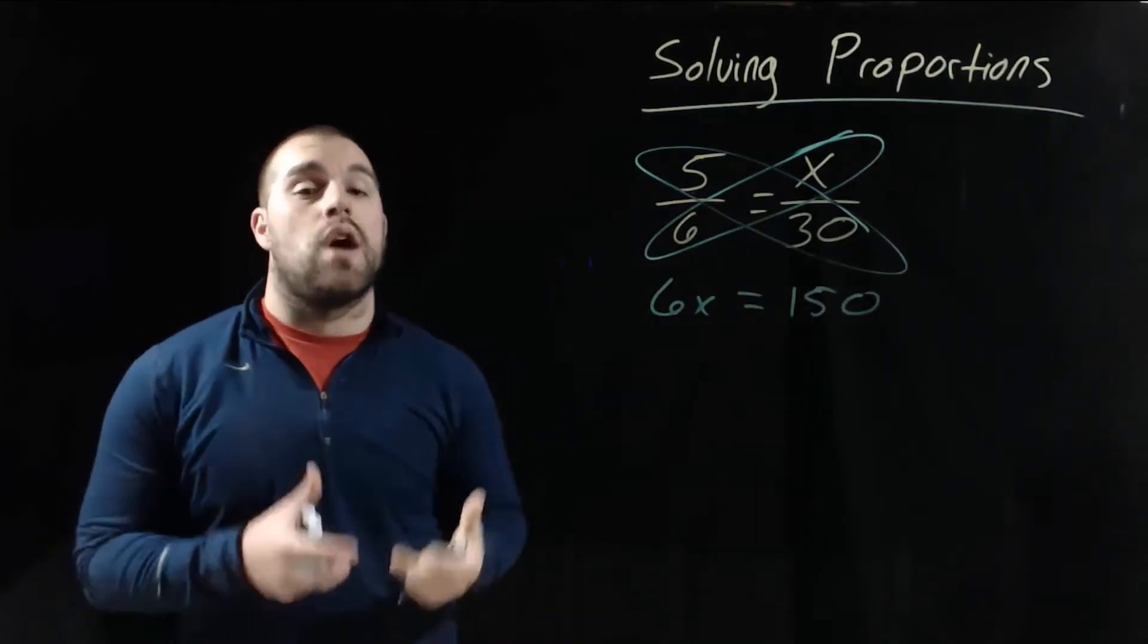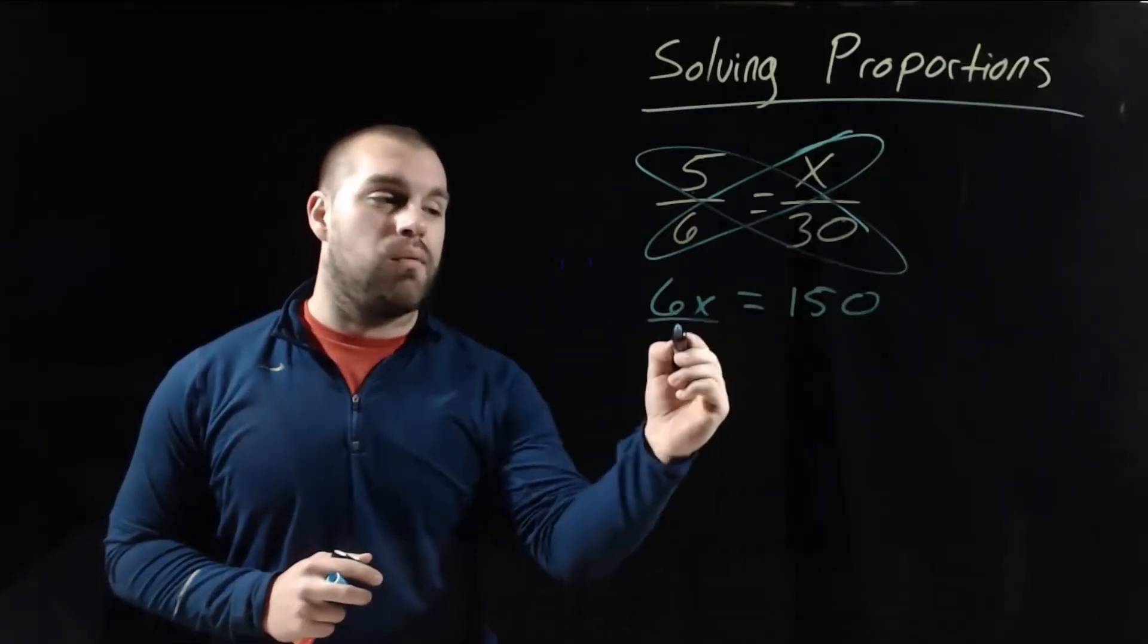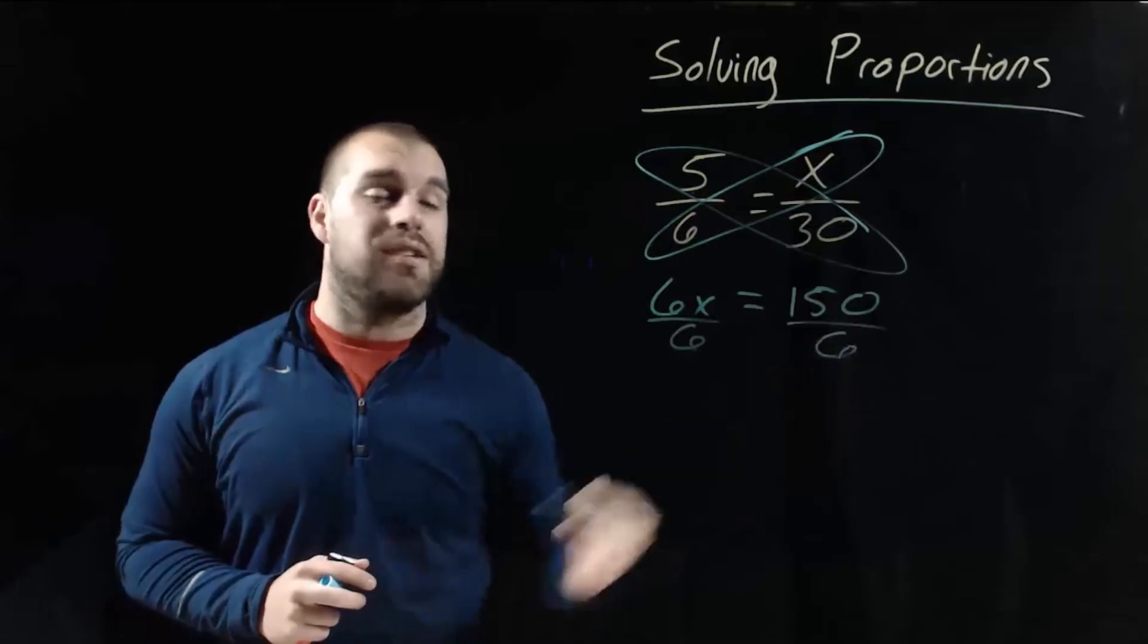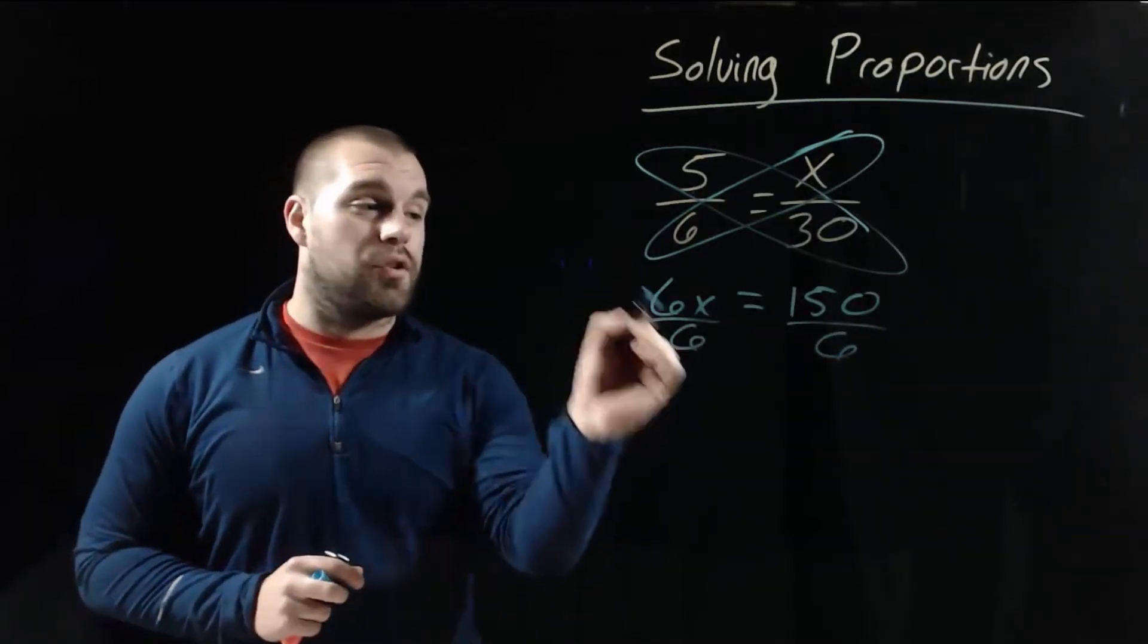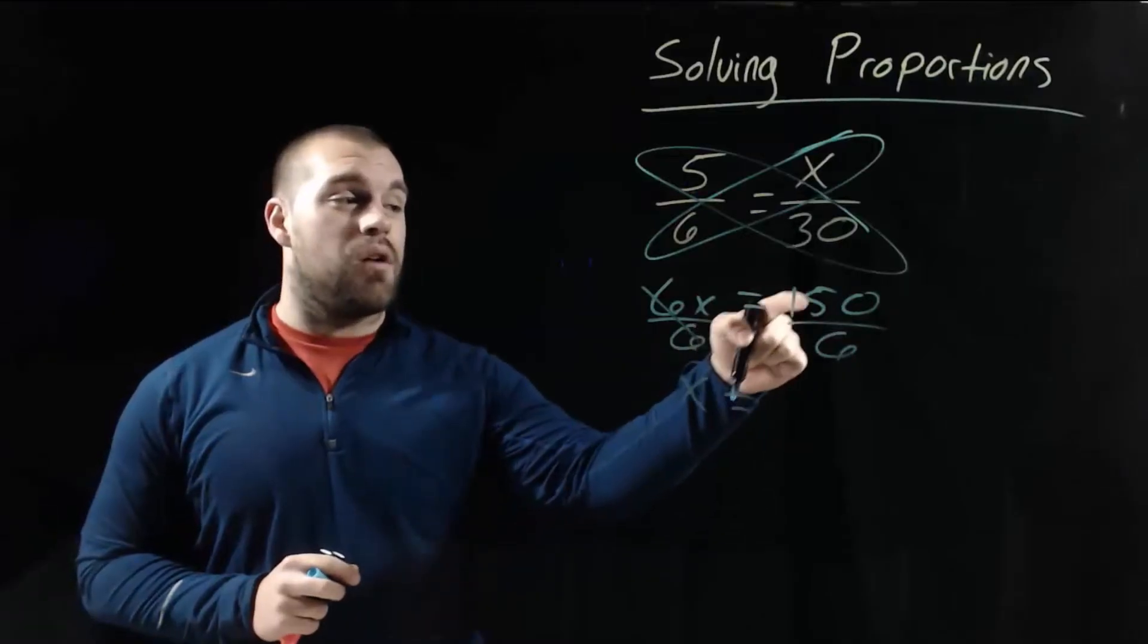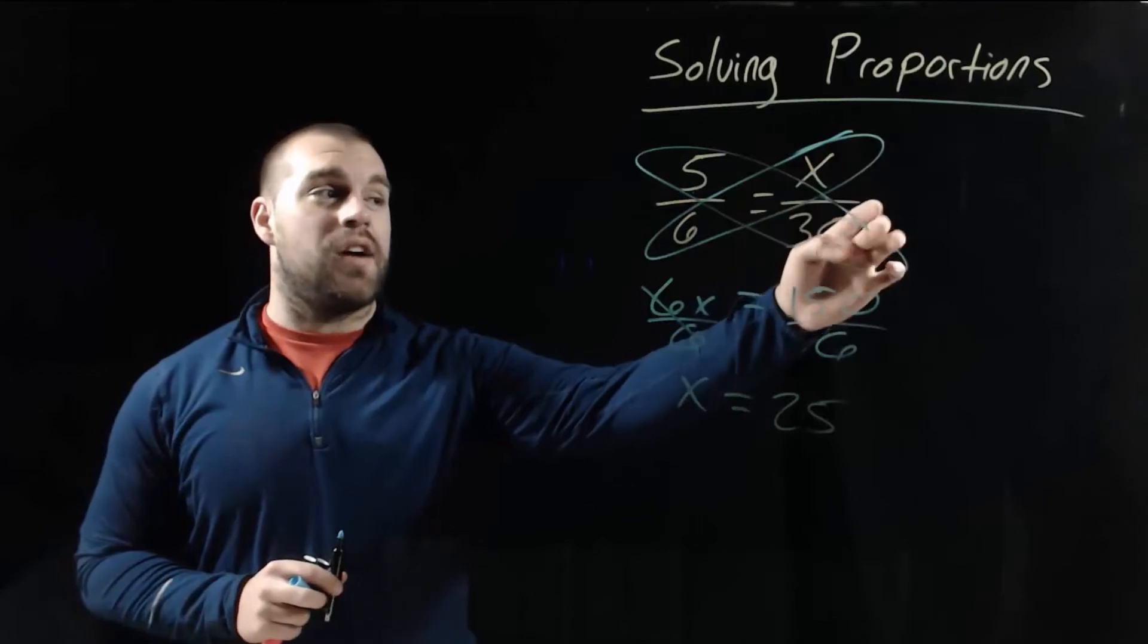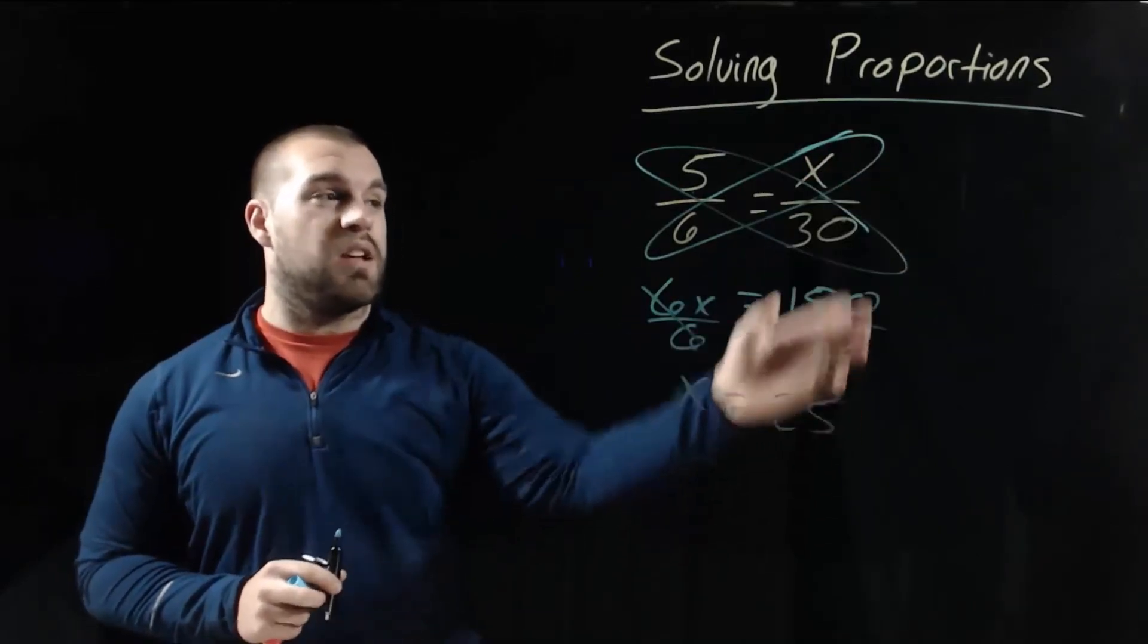Now we're solving for x. We're trying to get x all by itself. Right now we've got 6 times x. So in order to get rid of that times, we're going to divide each side by 6. These sixes are going to cancel out. We're just going to get x equals, on the right hand side, if we take 150 divided by 6, we're going to get 25 as our answer. So that missing x value from our proportion is 25.